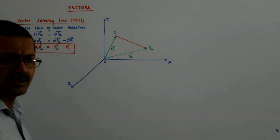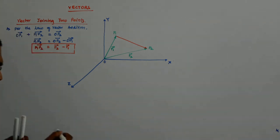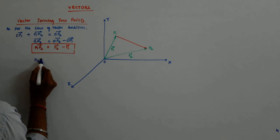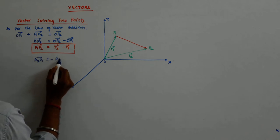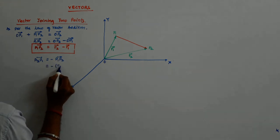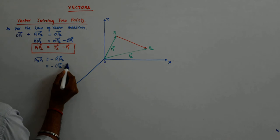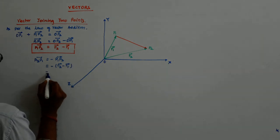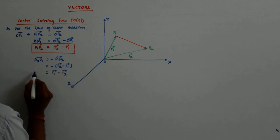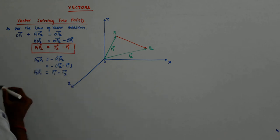Now how about P2P1? Is it not? P2P1 is negative of P1P2. That is one way of understanding that. So negative of R2 minus R1. So that gives me R1 minus R2. Is it not? So P2P1 is given by this.